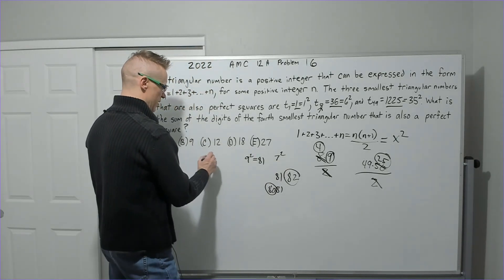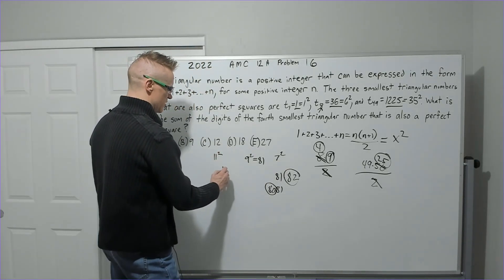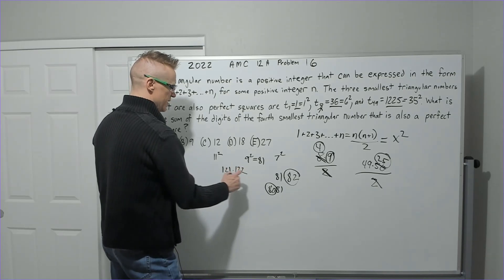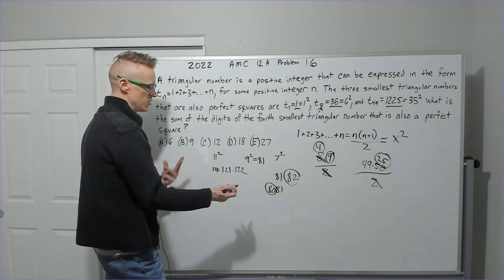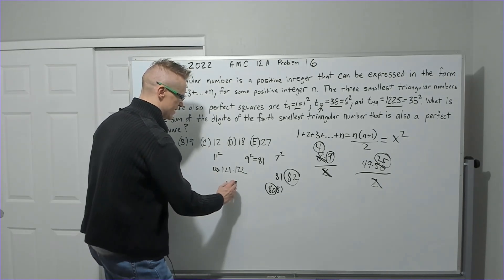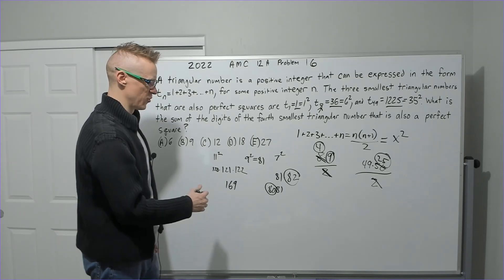So then we're going to go ahead and go up to the next one squared, which is 11 squared, 121. 122 cut in half is 61, 120 cut in half is 60. Those aren't perfect squares.